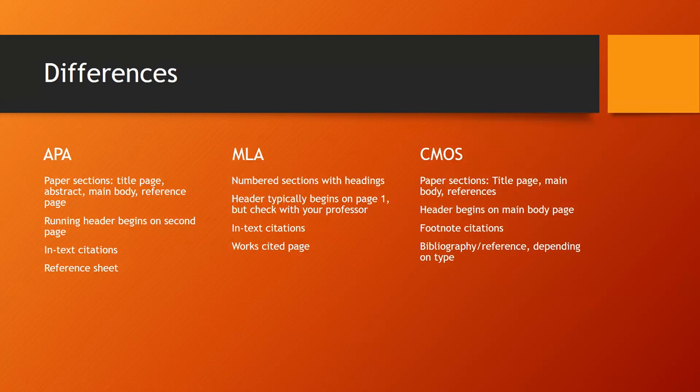Chicago also uses, depending on the type of paper and your professor's preference, either a bibliography or a reference sheet at the very end of your paper. The reference sheet is similar to the APA style, but a bibliography is a little bit different. Whereas APA has you cite the last name of the author followed by the first name, Chicago actually just has you do the full name of that researcher as it would appear on their birth certificate.